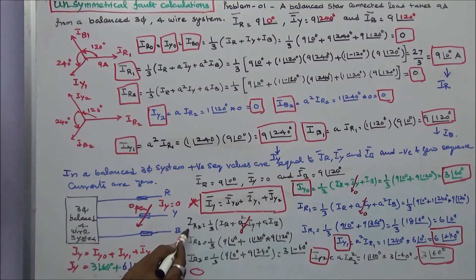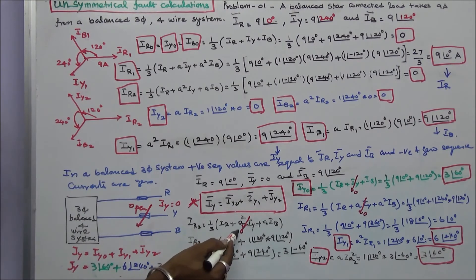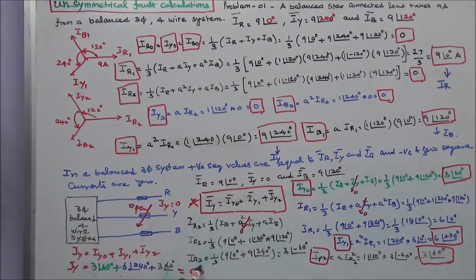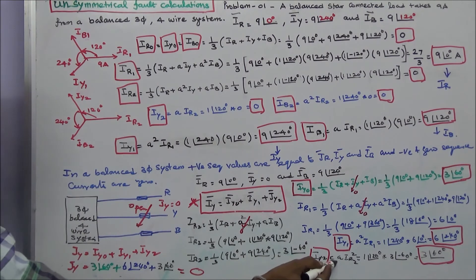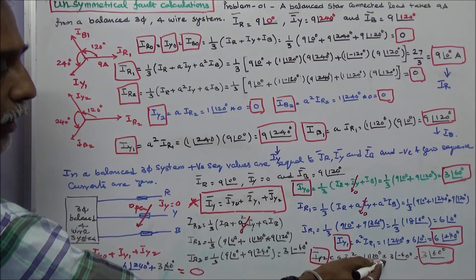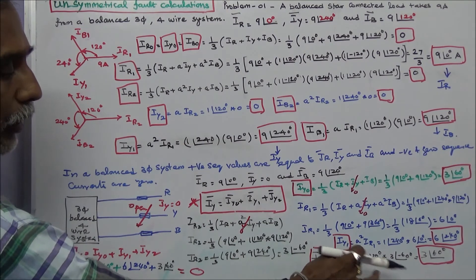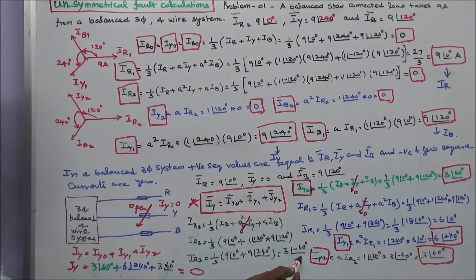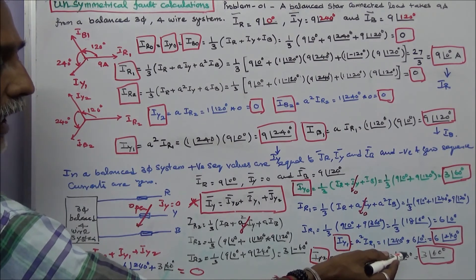Next, we calculate IR2. IR2 is equal to 1/3 into (IR plus A²·IY plus A·IB). Since A²·IY is zero, IR2 is equal to 1/3 into (IR 9 angle 0 degrees plus A 1 angle 120 degrees into IB 9 angle 120 degrees). IR2 is equal to 3 angle minus 60 degrees. We then calculate IY2: IY2 is equal to A into IR2, that is 1 angle 120 degrees into 3 angle minus 60 degrees, so IY2 is equal to 3 angle 60 degrees.